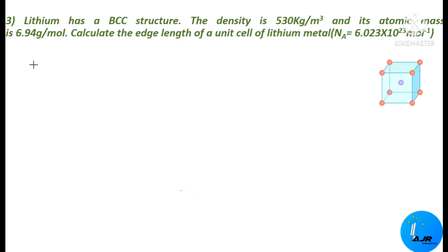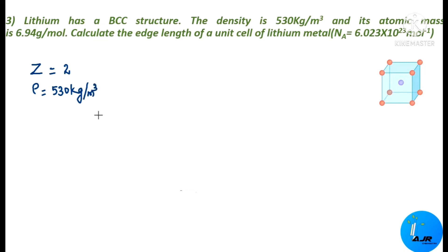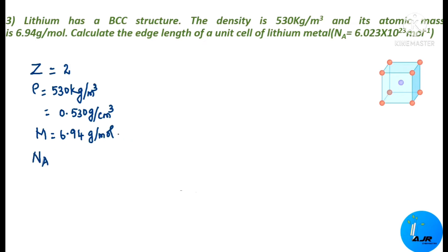Z for BCC is 2, since there are atoms at all corners plus one atom at the center. The density 530 kg/m³ is converted to gram per centimeter cube by dividing by 1000, giving ρ = 0.530 g/cm³. The atomic mass M = 6.94 g/mol, and Avogadro's number Nₐ = 6.023 × 10²³ mol⁻¹.